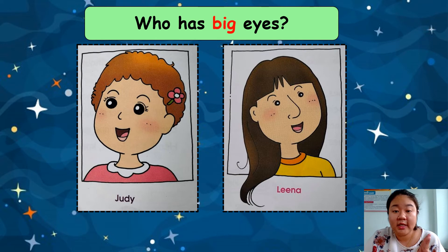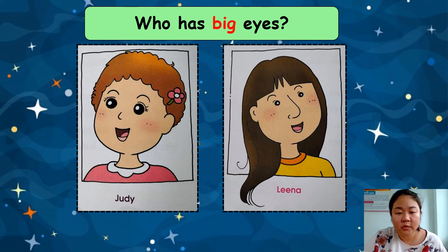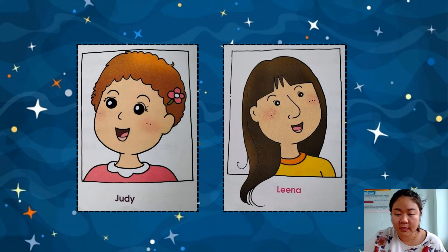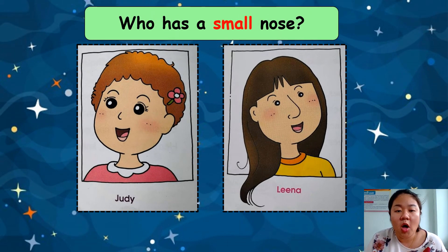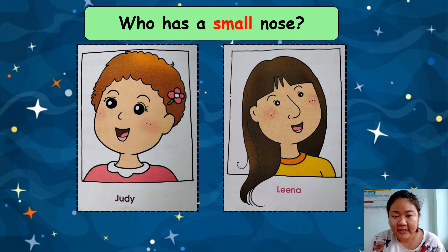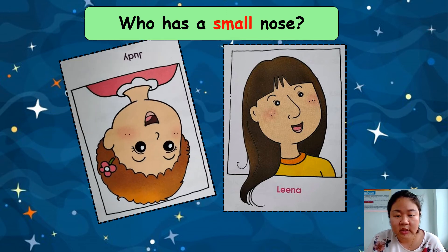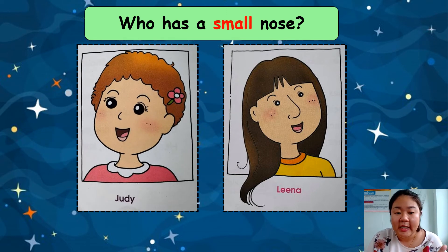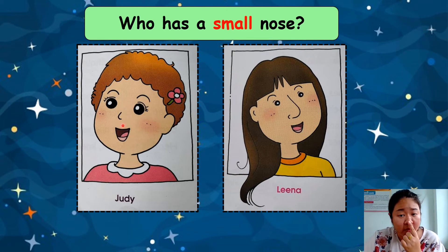I give you three seconds to answer the question — say the name out loud. Who has a small nose? One, two, three. The answer is Judy. Nose คือจมูก (nose means จมูก). Who has a small nose? Judy's nose is small — 'Small' means เล็ก (small). Judy's nose is small.